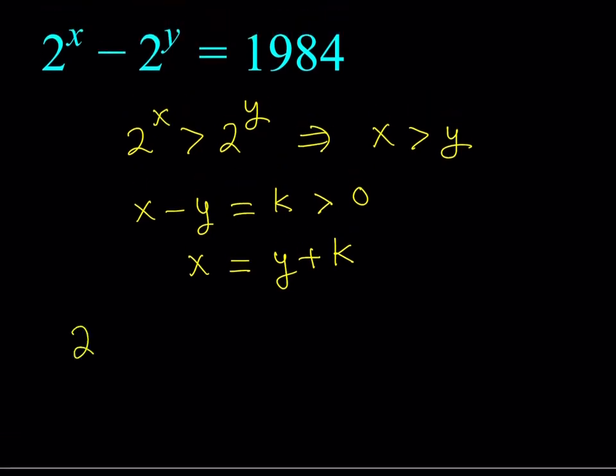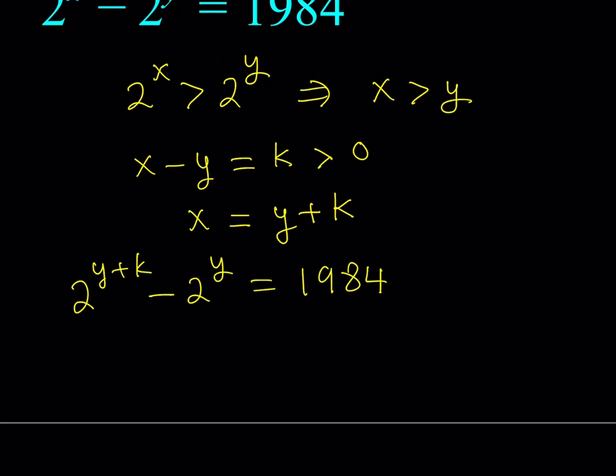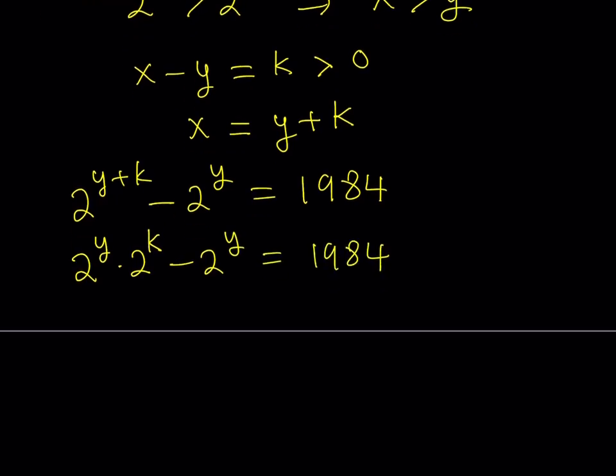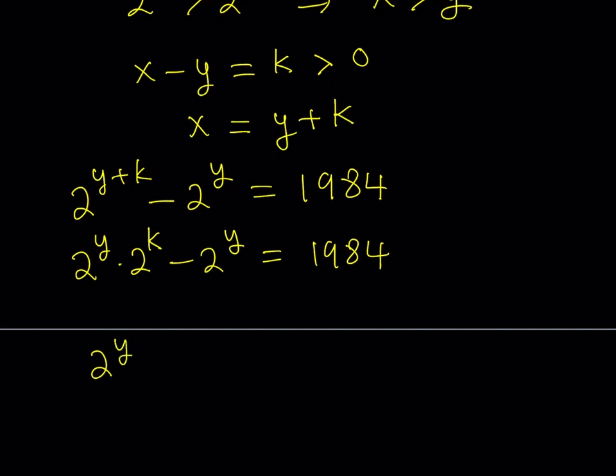So, replace x with y plus k and then minus 2 to the power y is equal to 1,984. Okay. Cool. Now, this process makes this equation factorable. How? You could write the left-hand side as 2 to the power y times 2 to the power k minus 2 to the power y. And then the answer. Now, notice that 2 to the power y is a common factor. So, we can take it out. And this gives us the following factorization.